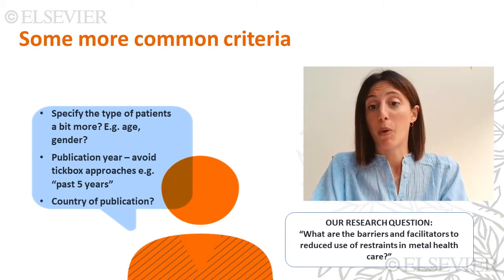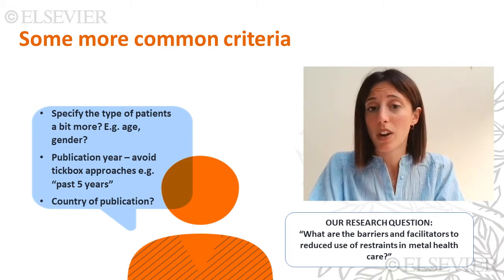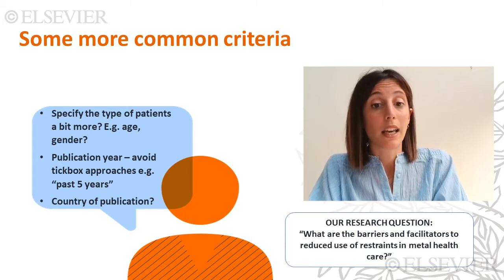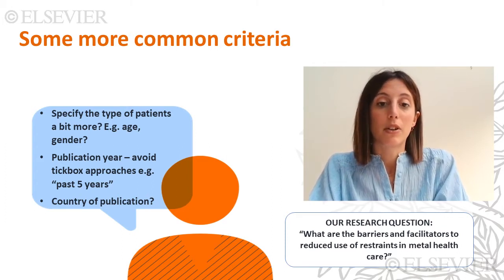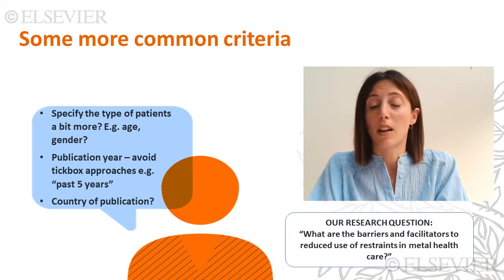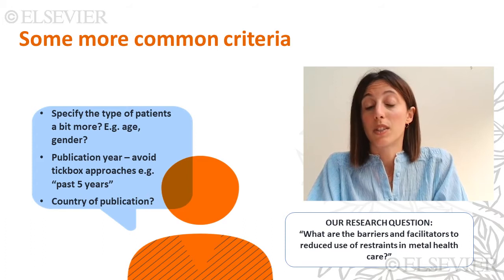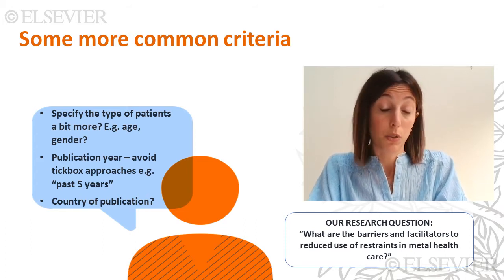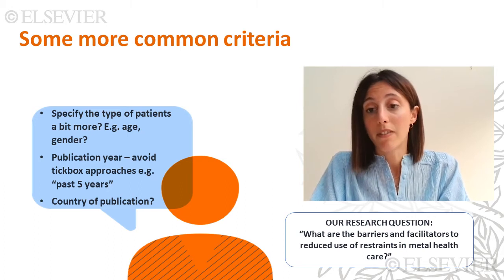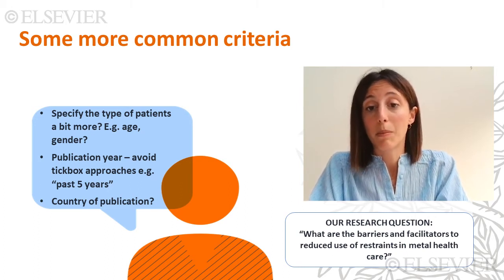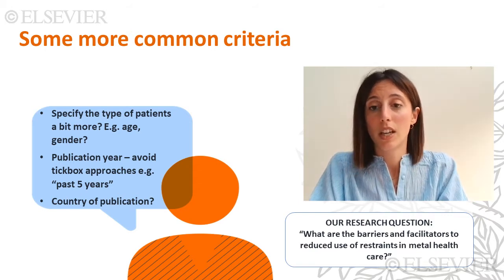Do we want to include studies about all patients? For example, do we want to focus on a specific age range or gender? Again, find some evidence to support that choice. For instance, is there a recent report that found restraints are more likely to occur for younger people? You might want to consider young age as an inclusion or exclusion criterion. On the other hand, if there is no specific evidence that age or gender are implicated in restraints, just include all patients regardless of age and gender.